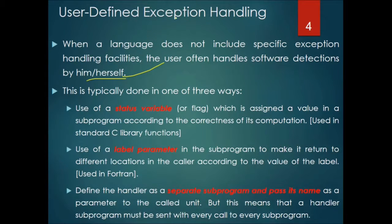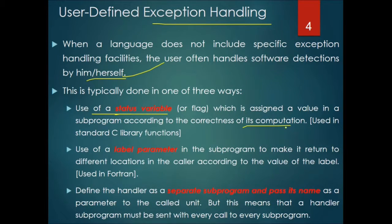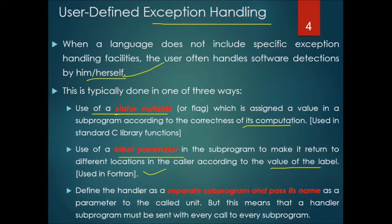How do we handle user-defined exception handling? One way is to use a status variable or flag which is assigned a value in a subprogram according to the correctness of its computation, as used in C library functions. Another way is to use a label parameter in the subprogram that makes it return to different locations in the caller according to the value of the label, as used in Fortran. A third way is to define a handler as a separate program and pass its name as a parameter to the code unit, though this means the handler must be sent with every call to every subprogram.